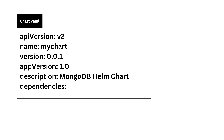You can also put dependencies in chart.yaml — for example, if your microservice requires a database like Redis or MongoDB, you can put that in here and place the chart files for that dependency in the charts directory. Helm will then deploy those dependencies first, then deploy your application. This is a Helm 3 feature; in Helm 2 you had to put this in a separate file called requirements.yaml.